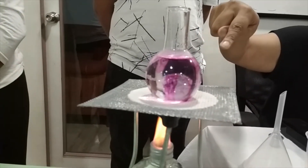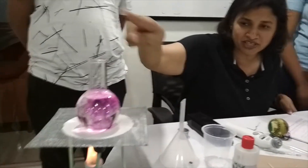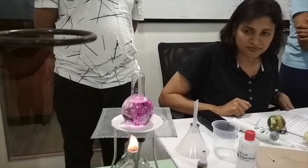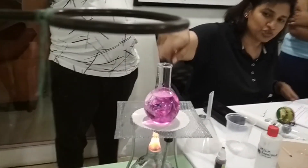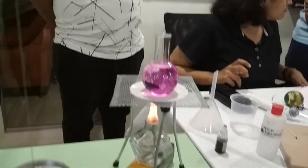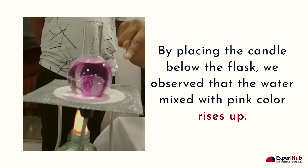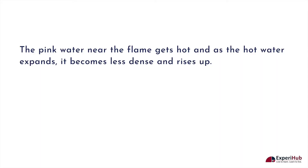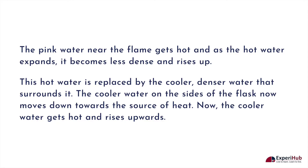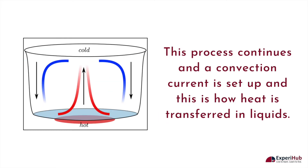Can you see the currents moving from a hotter area to a cooler area? The water goes from the bottom upward. It's warm and the whole water will heat up because of the convection current. This cold water gets hot and rises upwards. This process continues and the convection current is set up — and this is how heat is transferred in liquids.